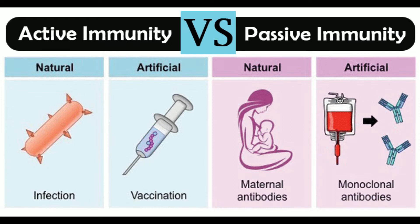Difference 3 — Immune system involvement: The immune system of the individual is actively involved in active immunity, whereas in passive immunity the individual's immune system is not actively involved but rather passive. Difference 4 — Natural acquirement: Active immunity arises naturally when an individual is exposed to an antigen or pathogen. Passive immunity arises naturally when a fetus receives antibodies from the mother across the placenta, or when a breastfeeding infant ingests antibodies in the mother's milk.